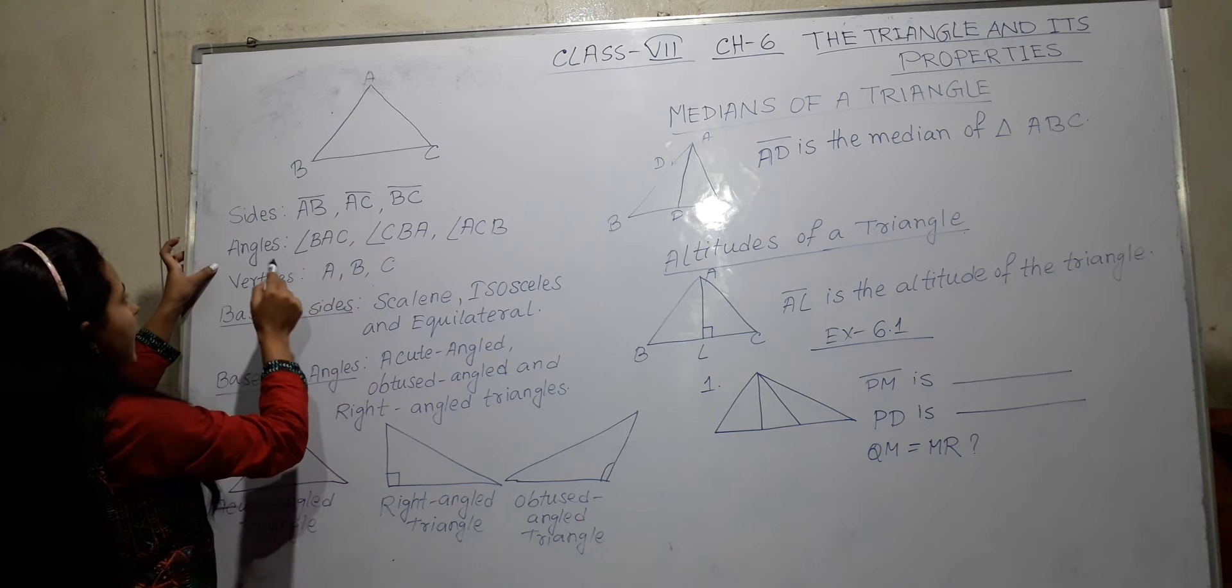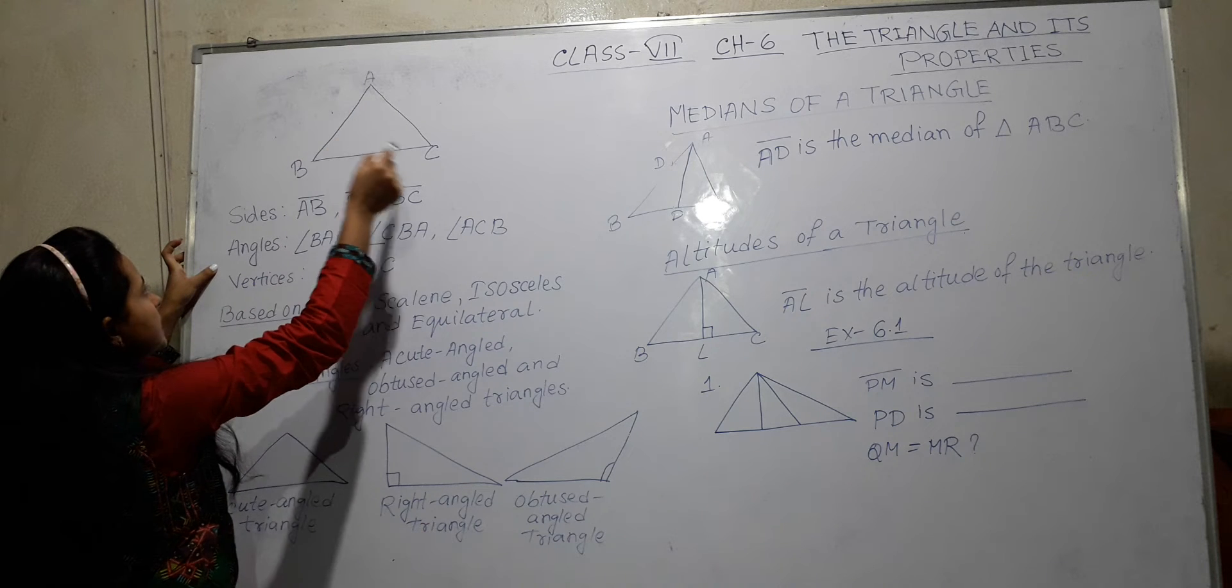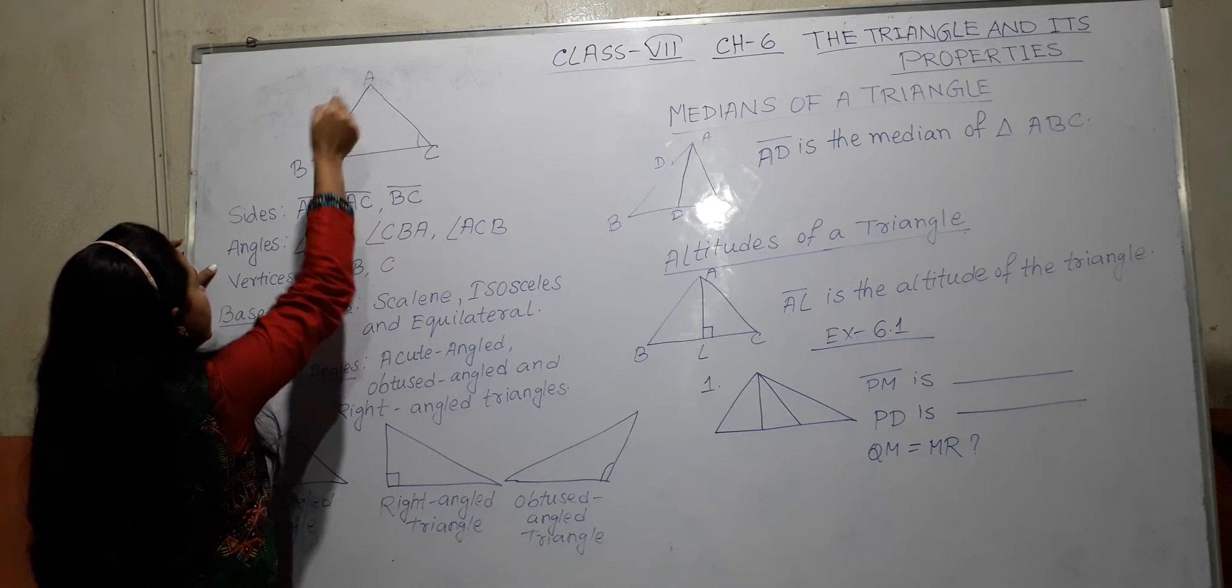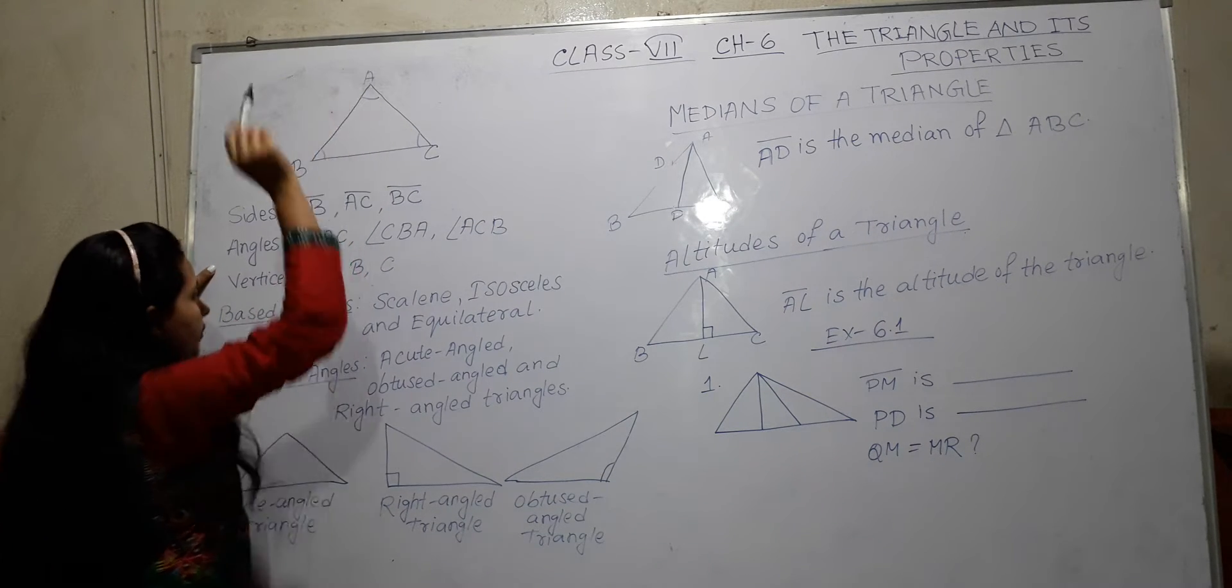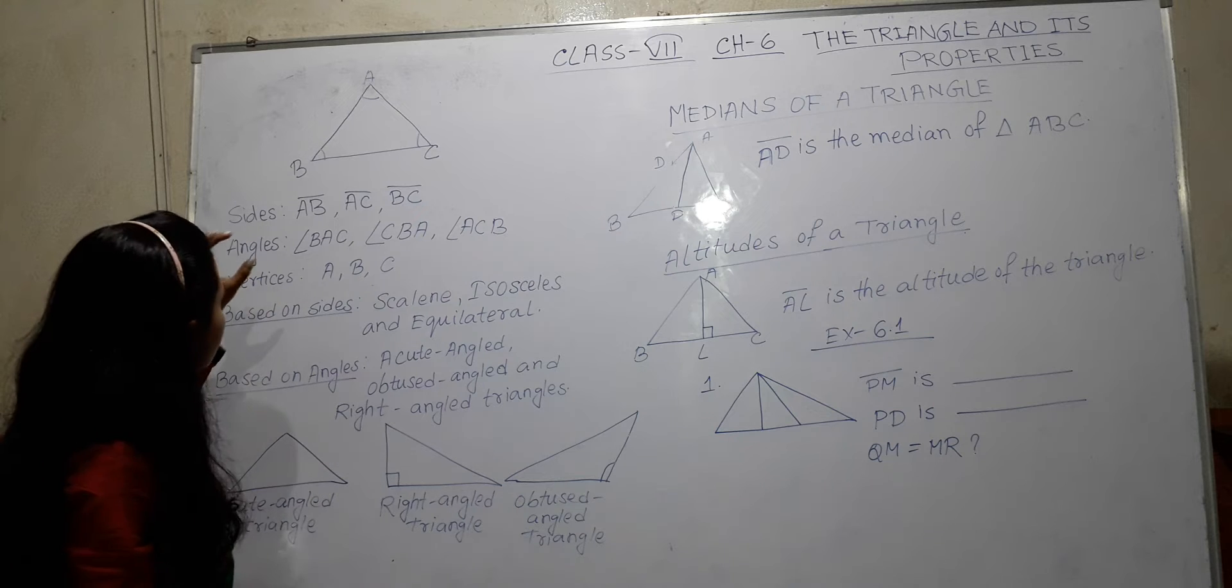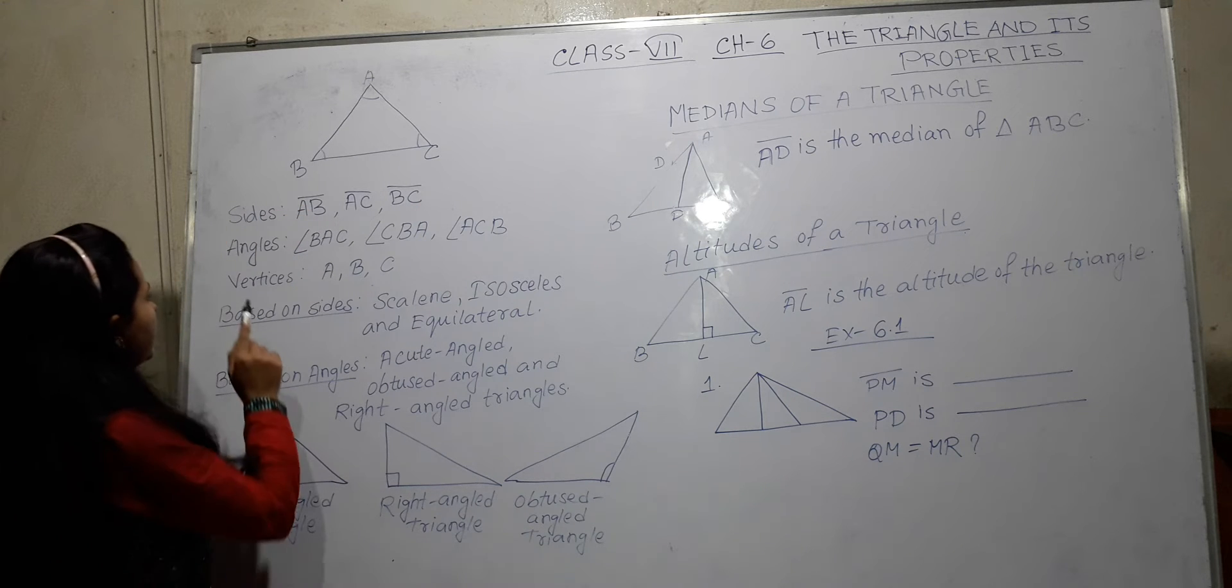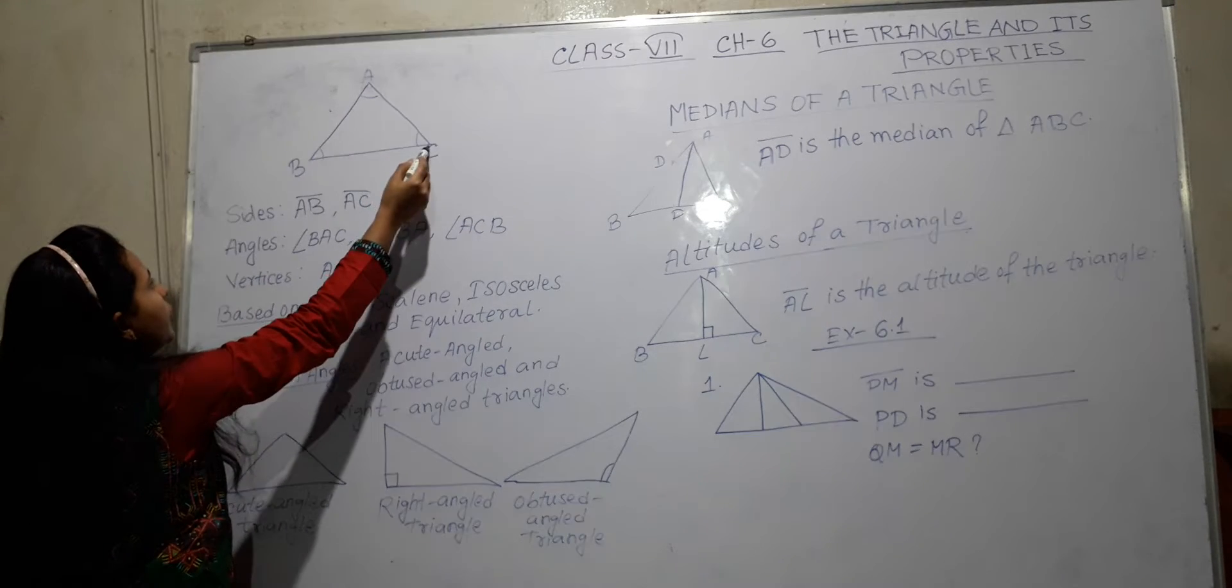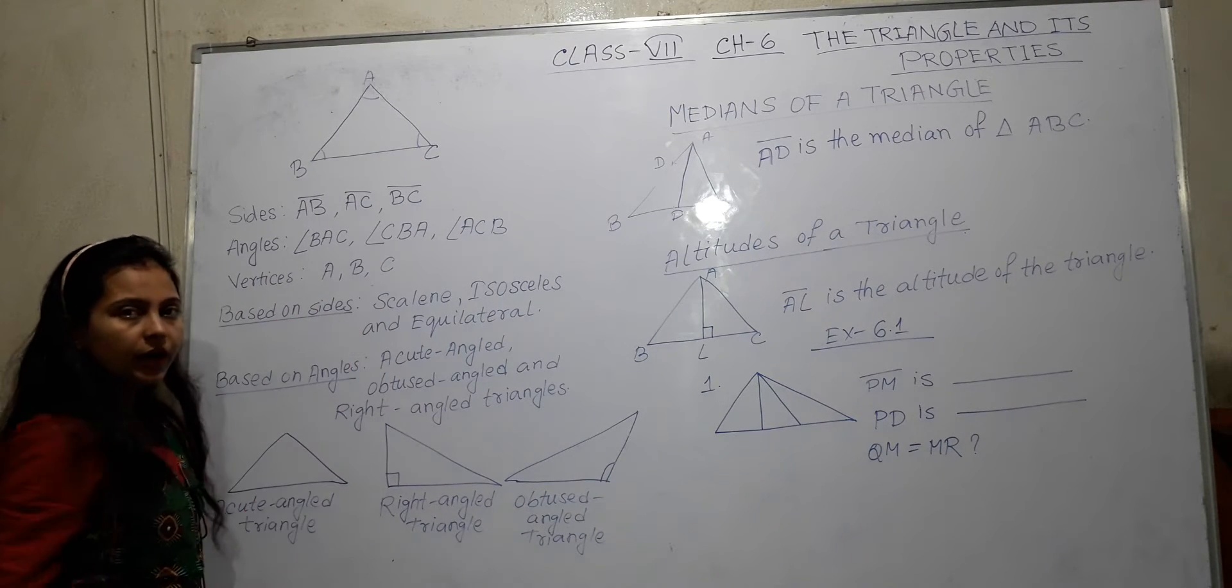And 3 angles: ABC, BCA and CAB. From our junior classes we know about these two. And last is vertices. This point A, point B and point C is called vertices.